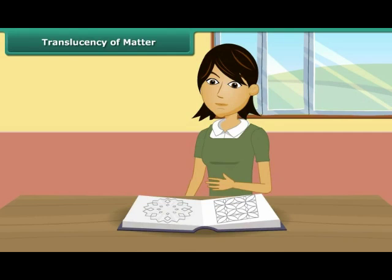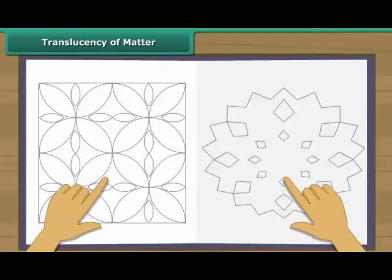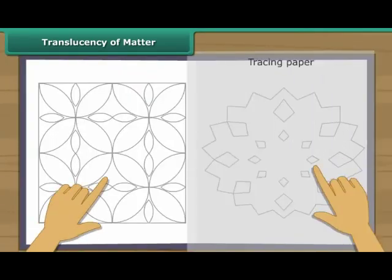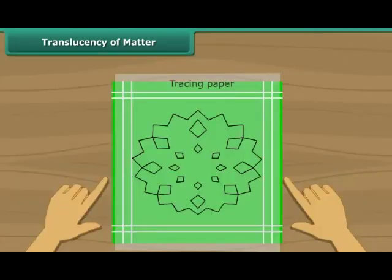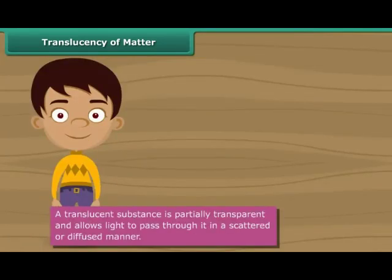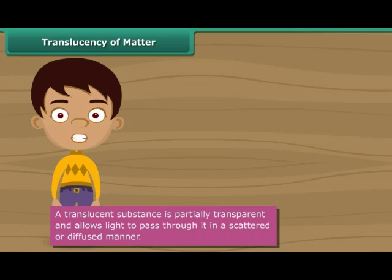Rekha is getting ready to embroider a handkerchief. She has located a pattern in a book and wants the same on her handkerchief. She uses a tracing paper to copy the pattern from the book onto her hanky, and is all set to embroider. What made this possible was the translucent tracing paper. A translucent substance has the characteristics of both transparent and opaque substances — while it absorbs some light, it reflects back the rest. The absorbed light is transmitted in a scattered or diffused manner. Other examples of translucent substances are paper, paraffin wax.